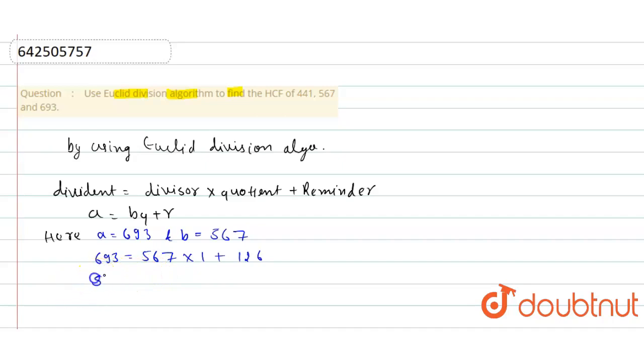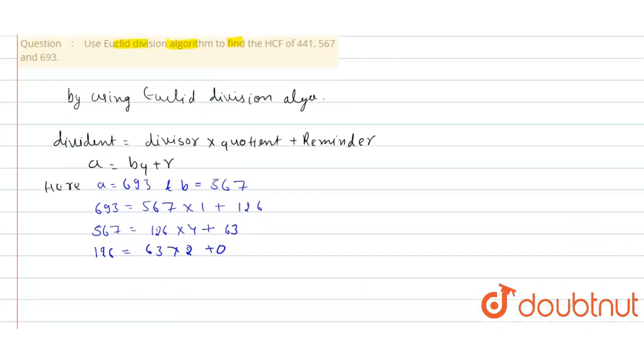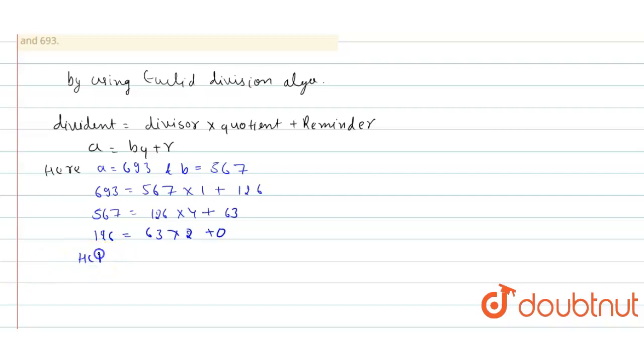And next step, this divisor will become the dividend. Then it will become 567 and that remainder will become 126. If we multiply with 4, then we will get remainder 63. Then we will get 126 and 63.